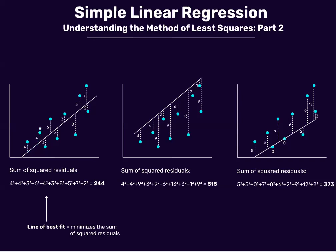We can do that for the next observation as well — let's say the distance from that observation to the line is four units. The next one is a little closer, so that residual is three units. Then the next one is a bit longer, so it's six units away from the line. We calculate this residual for every single observation in our data set.